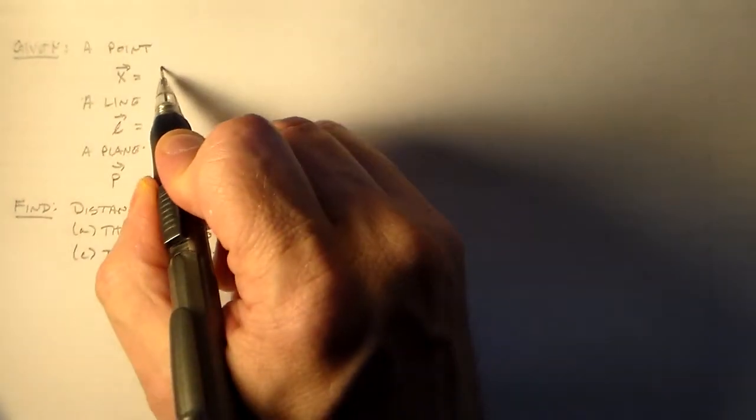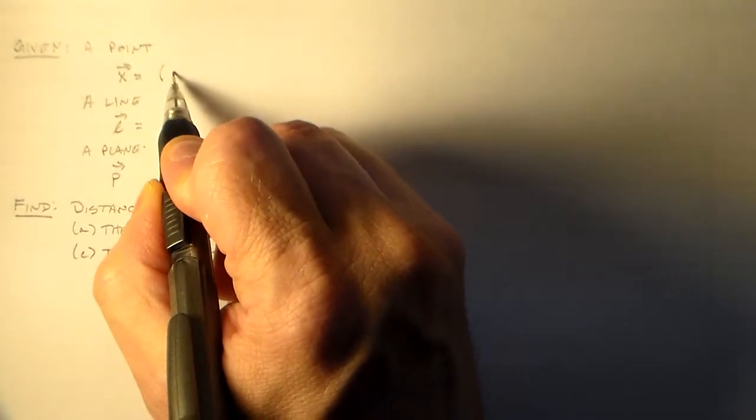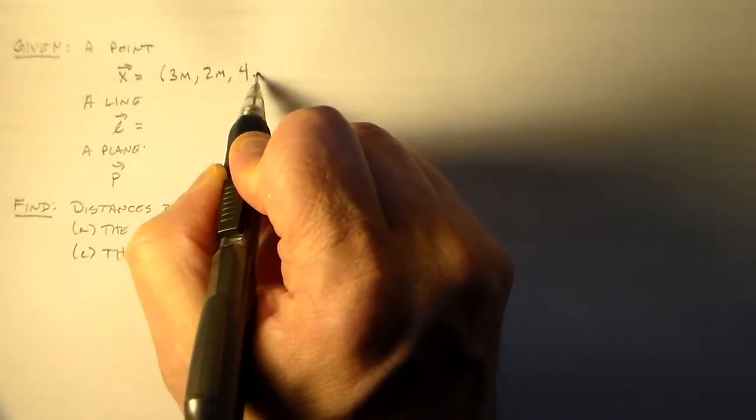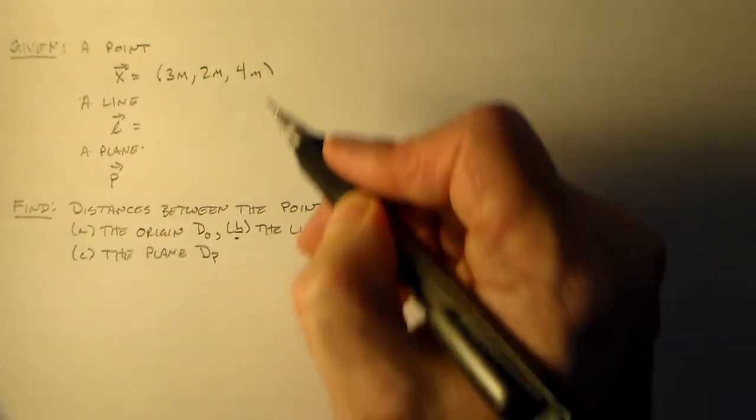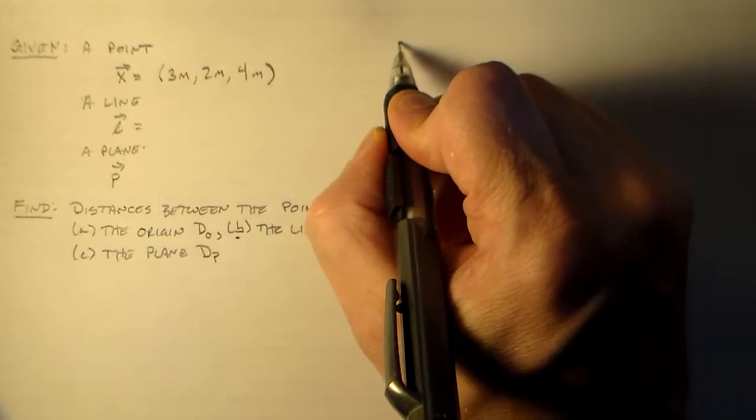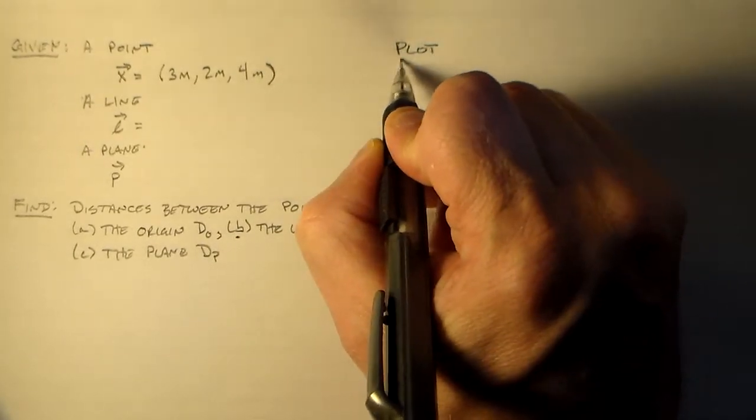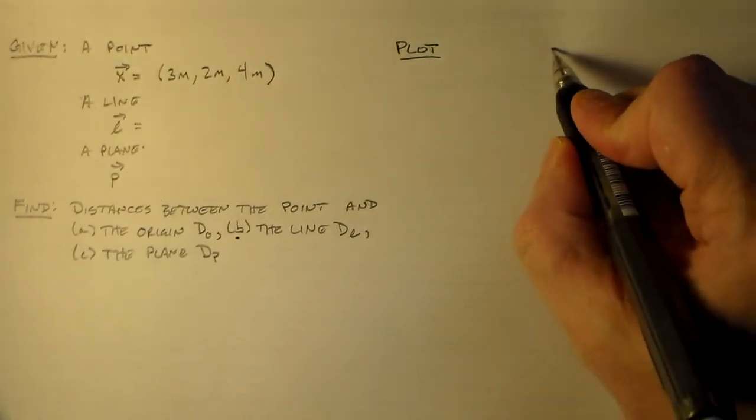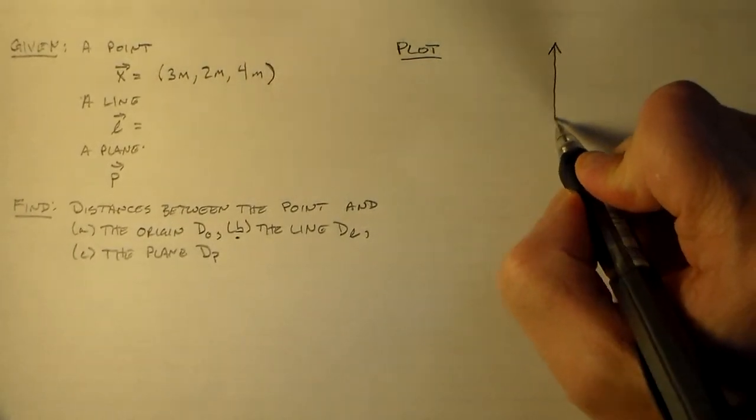So for this we'll have to define a point, and I'll call that 3 meters, 2 meters, 4 meters. This point was chosen purely on the basis of how small the numbers are. So let's see, what have we got?